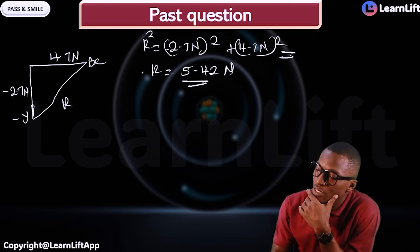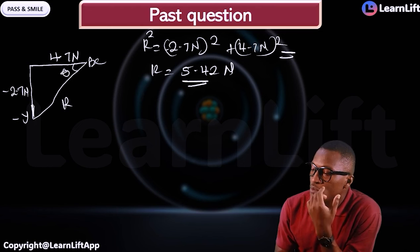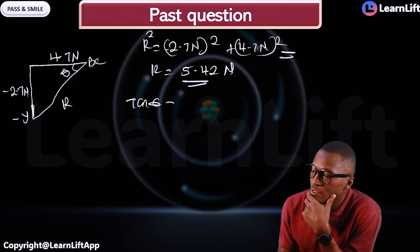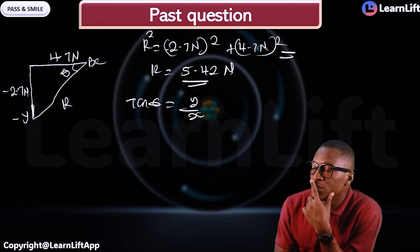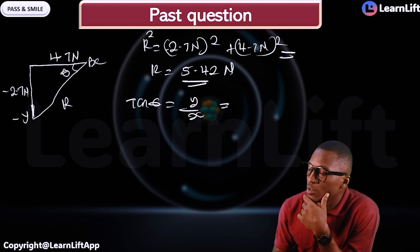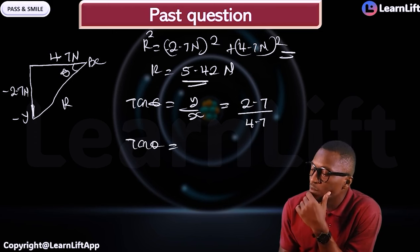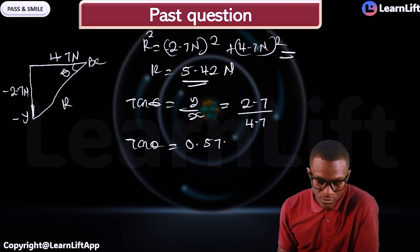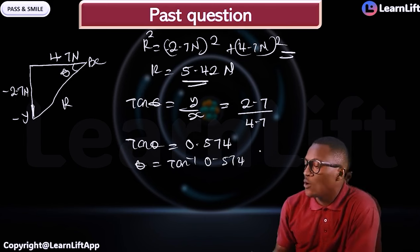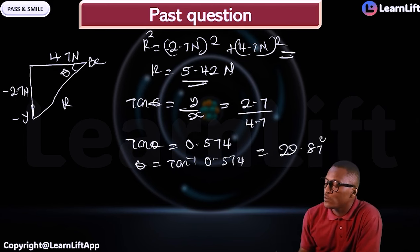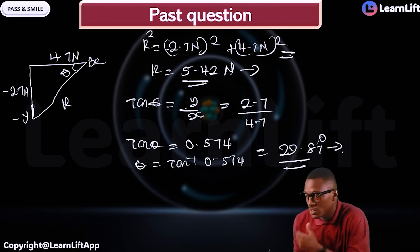For the direction, tan θ = Fy / Fx = 2.7 / 4.7 = 0.574. So θ = tan⁻¹(0.574) = 29.87°. That gives us the magnitude of 5.42 N and direction of approximately 29.87°.